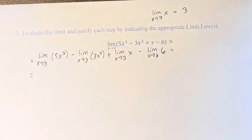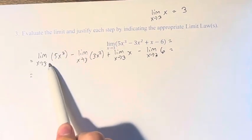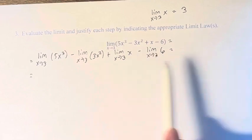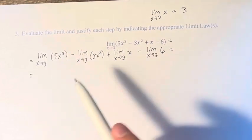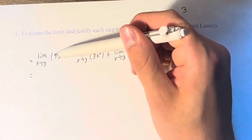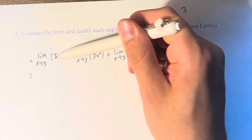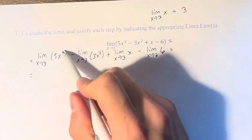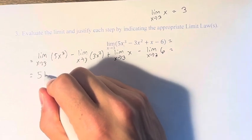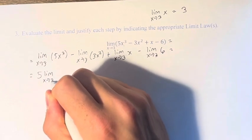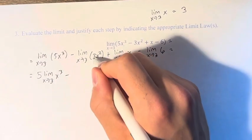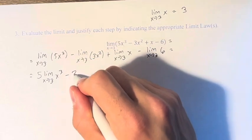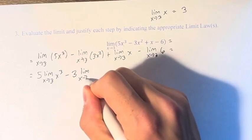Now, we have two types of terms here. We have these terms which we still need to work on, and these terms we can just solve outright. So for these terms, the next step is to pull out the constant coefficient here. So the limit of 5x cubed is equal to 5 times the limit of x cubed. So we can similarly pull out the 3, so it's minus 3 times the limit of x squared.